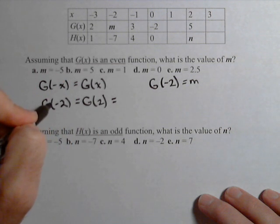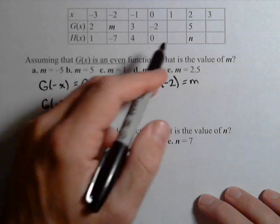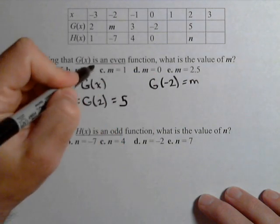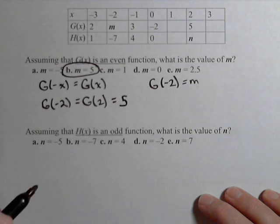So m is equal to g of negative two, which is equal to g of two, which according to our table is equal to five. And so m should be five.